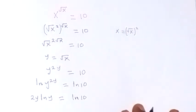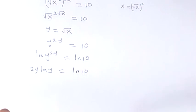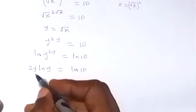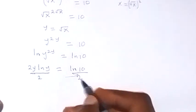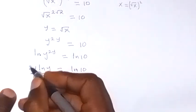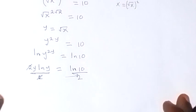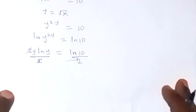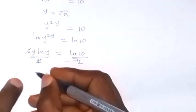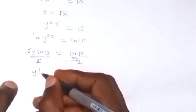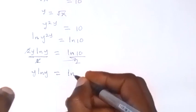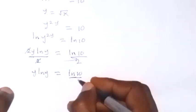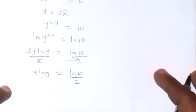And let's remove these two here. And we divide both sides by 2. We have this side divided by 2, this side divided by 2. And these two cancel. So this will mean y ln y equals to ln 10 over 2.